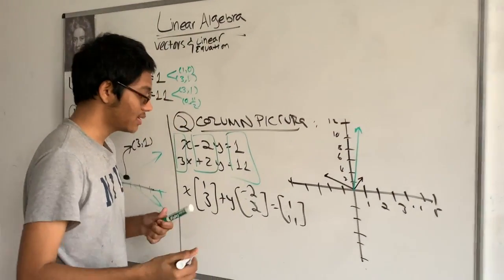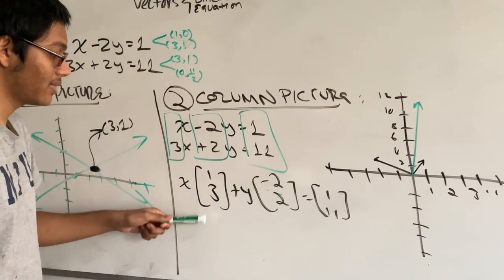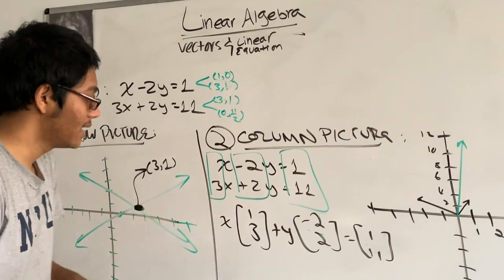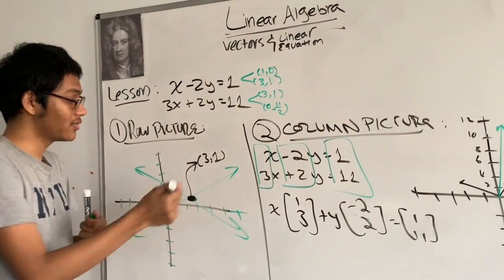So now, what combination, that's the question I'm asking, of these two black vectors do I need to get the green one? And I already know what combination. It's 3, 1.